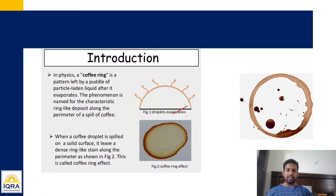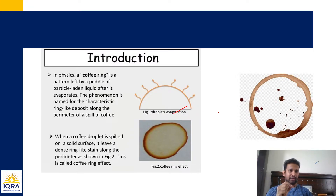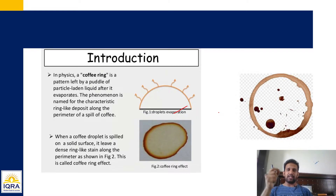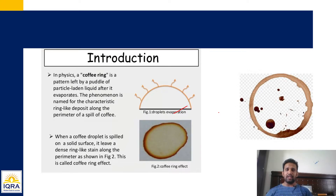Introduction: jabhi bhi aap ek coffee peete hain, coffee peenay ke baad, suppose ek coffee ka drop — jo ki liquid drop hai — agar spill karke table pe gira jata hai, ya zameen pe gira jata hai, toh thodi der ke baad aap kya dekhte hain ki yeh sukh jata hai. Jabhi sukh jata hai, toh aise ek ring dikhti hai aapko — the same as whatever is shown in the image here.